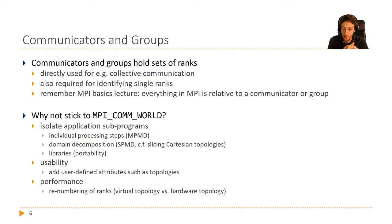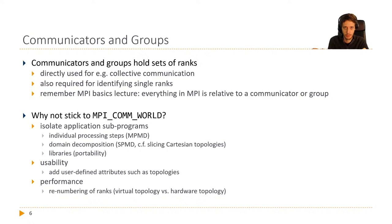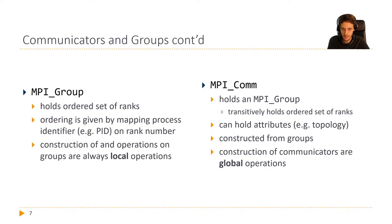Beyond that, it's quite useful to create new communicators because you can add user-defined attributes like topologies and more. It may also be useful to create new communicators even if they have the same size and hold the same ranks as before, because you can ask MPI to renumber them to get a more efficient neighboring relationship — for example, to have your virtual topology match the hardware network topology.